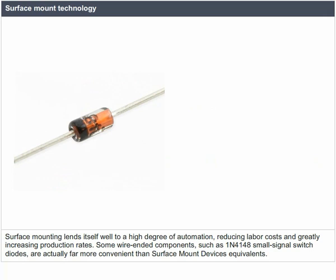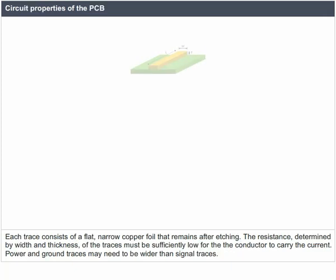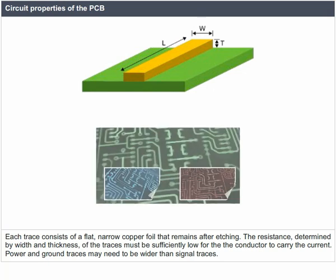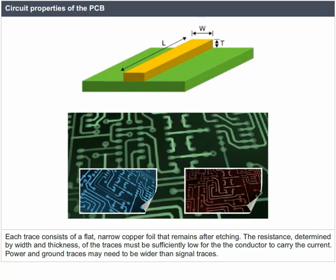Surface mounting lends itself well to a high degree of automation, reducing labor costs and greatly increasing production rates. Some wire-ended components such as 1N4148 small signal switch diodes are actually more convenient than surface mount device equivalents. Circuit properties of PCB: each trace consists of a flat, narrow copper foil that remains after etching. The resistance determined by width and thickness of the traces must be sufficiently low for the conductor to carry the current.